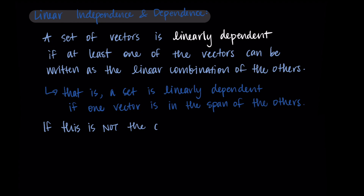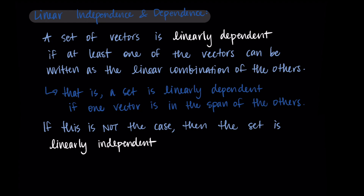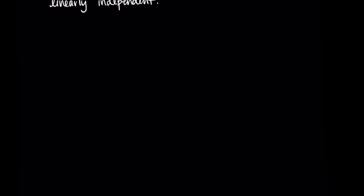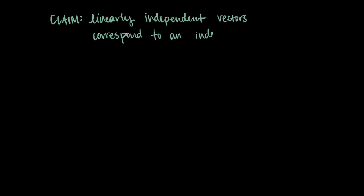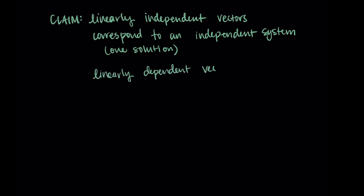Linearly dependent is the word we define. In all other cases, the set is linearly independent. I like to think of this as meaning that all of the vectors are needed — they're independently important. There isn't a single one that's just a linear combination of the others. My main claim is that linearly independent vectors correspond to an independent system when arranged as the columns of a matrix, meaning the corresponding system has one solution.